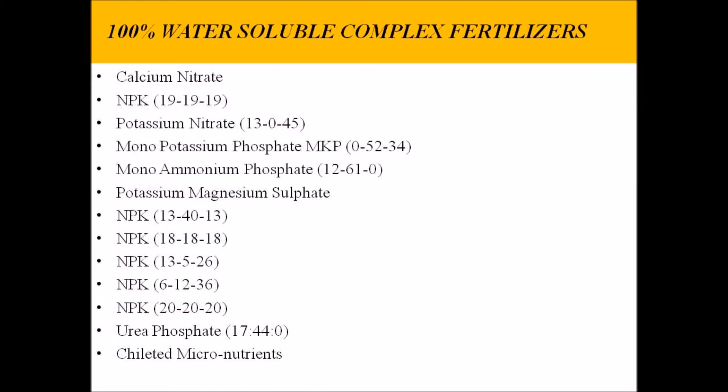After knowing the essential plant nutrients, let's understand the recommended fertilizers for hydroponic crop production. The most widely used fertilizers are calcium nitrate, triple 19, potassium nitrate, MKP (monopotassium phosphate), MAP (monoammonium phosphate), and chelated micronutrients. We generally use chelated micronutrients for hydroponic systems, or micronutrient fertilizer combinations readily available in the market, selected based on crop requirements.